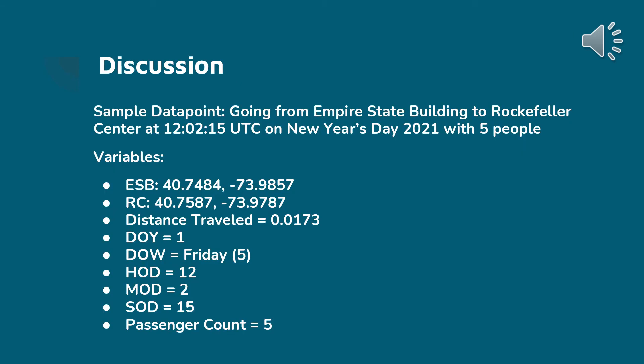Since we are working with a regression problem, our objective is prediction. Here we have a sample data point going from the Empire State Building to the Rockefeller Center at around noon UTC on New Year's Day 2021 with five people. The variables include ESB coordinates (40.74, -73.98), RC coordinates (40.75, -73.97), distance traveled 0.0173, day of year 1, day of week Friday (5), hour of day 12, minute 2, second 15, and passenger count 5.